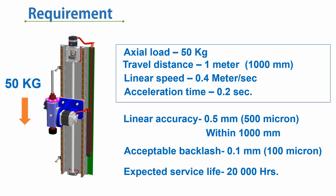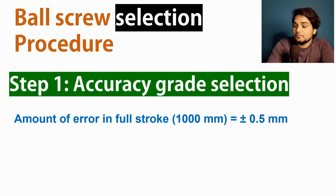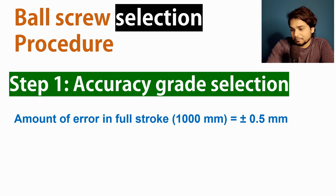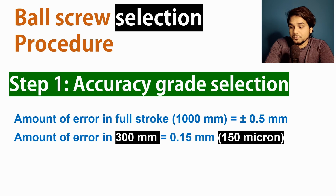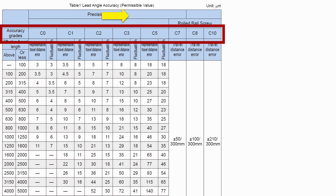Now we can start the ball screw selection procedure. The first step is selecting the correct accuracy grade as per the requirement. Our accuracy requirement is ±0.5 mm per 1000 mm — meaning an error of 0.5 mm within 1000 mm of travel is acceptable. Since manufacturers define accuracy grade per 300 mm of travel, the acceptable error per 300 mm becomes 0.15 mm, or 150 microns. We then check the accuracy grade table from the manufacturer catalog — here I am referring to the THK catalog, but you can use any manufacturer.